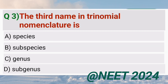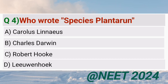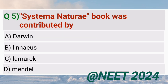The third name in trinomial nomenclature is subspecies. Who wrote Species Plantarum? Carolus Linnaeus. The book Systema Naturae was contributed by Linnaeus.